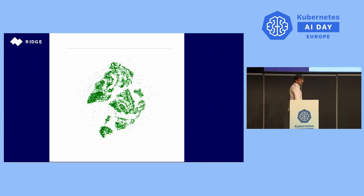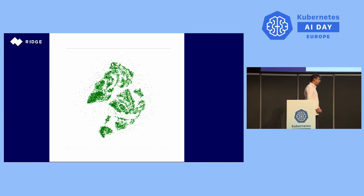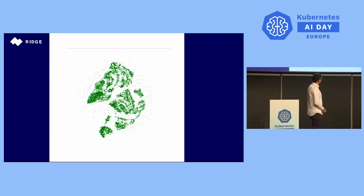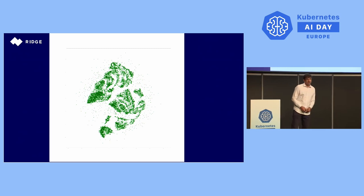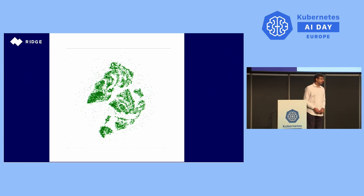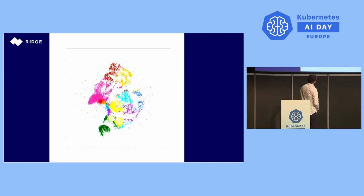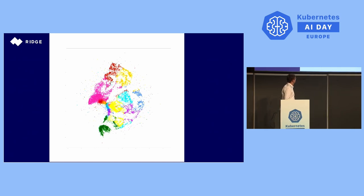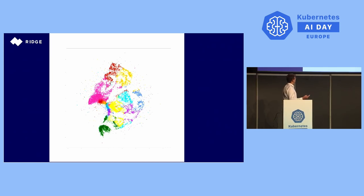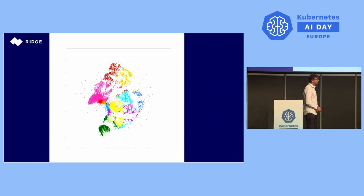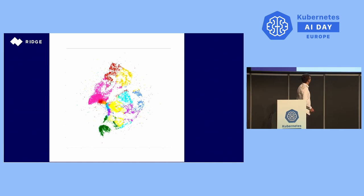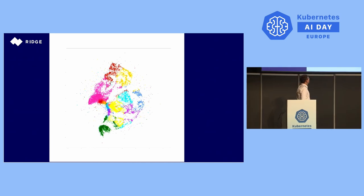Now let's classify it. I took the simplest approach and just applied a simple k-means algorithm to divide those points into eight classes. And this is the result — you basically see that k-means eventually found the clusters presented by the UMAP. Of course there are some differences, but this is the real world — this is how the world works.